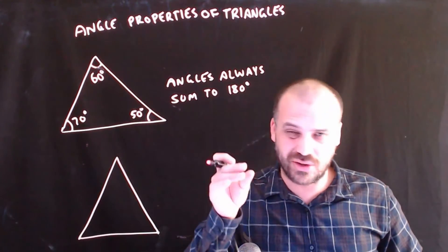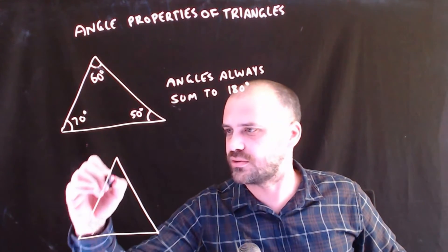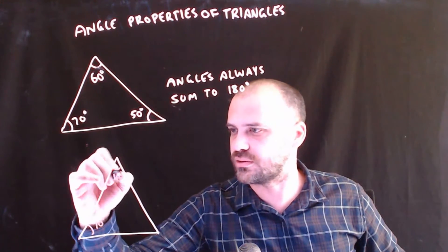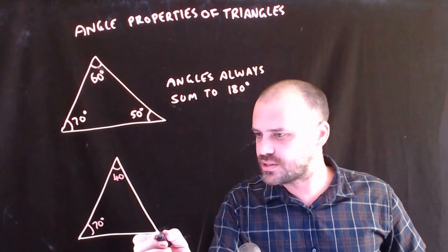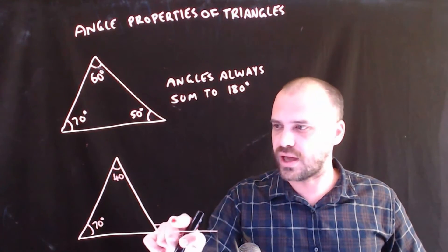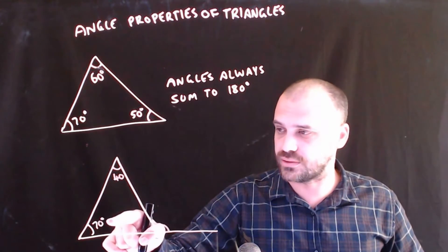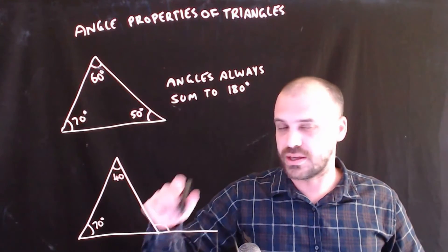The other rule that teachers insist on you knowing is one that looks a bit more like this. Let's call that 70 degrees. Let's call that 40 degrees. If I extend this line out here, I know that that angle is going to be equal to the sum of those angles. 70 plus 40 is 110. That angle is definitely 110 degrees.